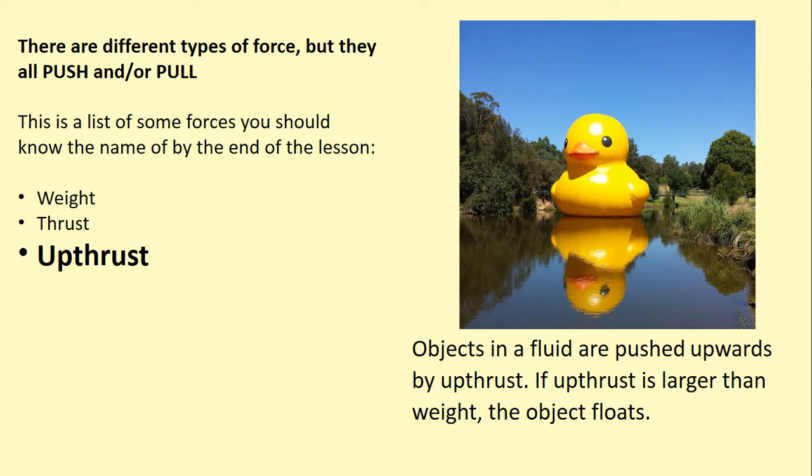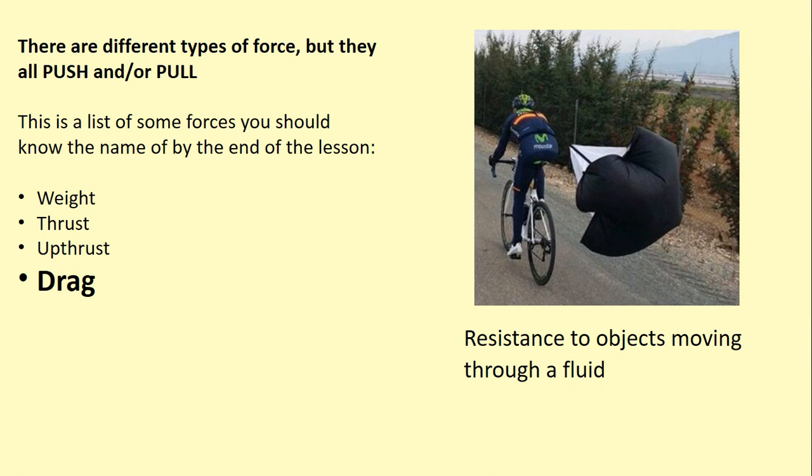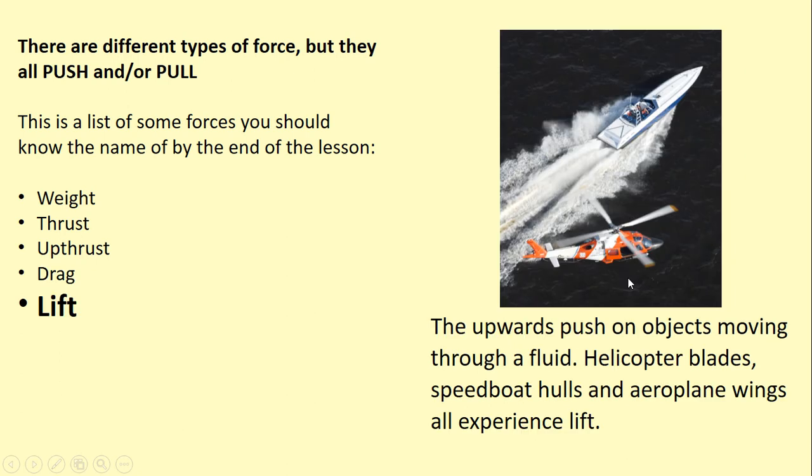The only objects that don't have upthrust are in space or in a vacuum. Drag is any resistance to objects moving through a fluid. This cyclist has got a drag chute to increase that resistance, that drag. It could be through water, it could be through air. Air resistance is an example of drag. Lift is an upward force that pushes objects up when they are moving through a fluid, so airplane wings, helicopter blades, and even the hull of a boat will give the object lift as it moves through that fluid.